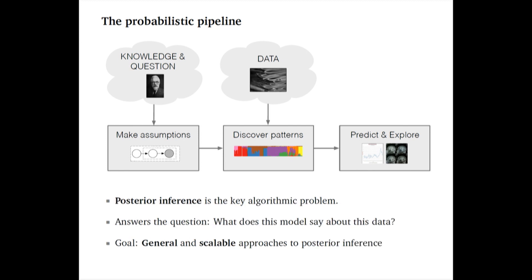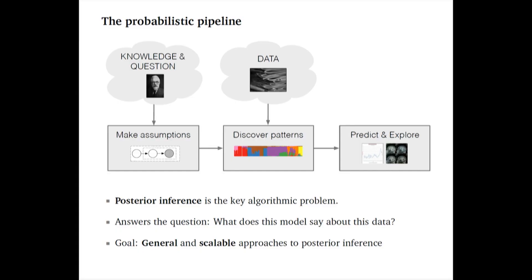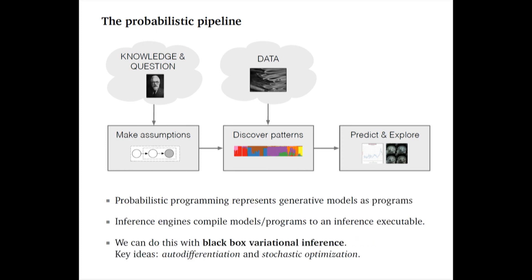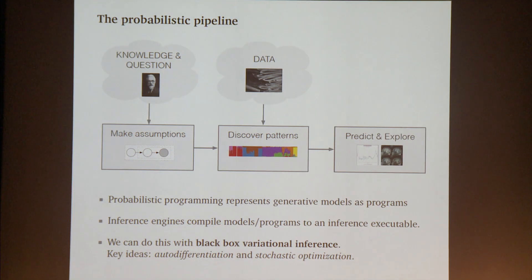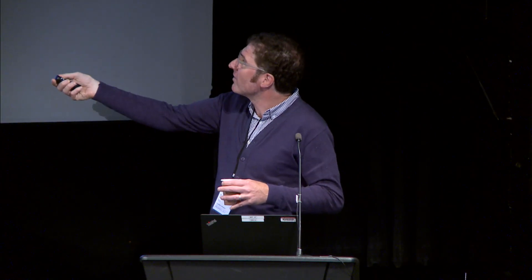I like this picture because it separates these key activities of making assumptions, performing computation, and applying the results. It makes it easy to collaborate with domain experts. The key algorithmic problem here is, of course, posterior inference — where I take my model and my data and infer the hidden variables from the observed data. Posterior inference answers the question: what does this model say about this data? Our goal in probabilistic programming is to develop inference algorithms that are general and scalable. In probabilistic programming, we represent these models as programs defining generative processes of data involving hidden elements, and the inference engine compiles the program into an inference executable.